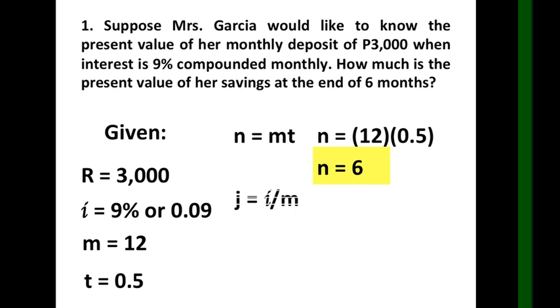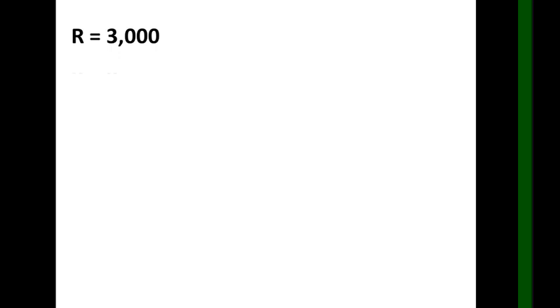For the next one, we have j equals i over m, which is 0.09 divided by 12, and the answer is 0.0075. Now we can solve for P. Write first the new given for our problem: R is 3,000, n is 6, and j is 0.0075.